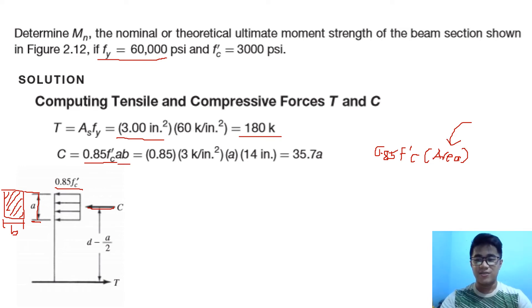In this section, that area that is compressed is b and a. We don't know the value of a yet. We just know the value of b because b is already given in the section, but we don't know which height—until which portion is being compressed. That means our a is still missing.